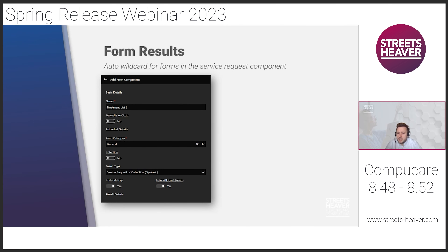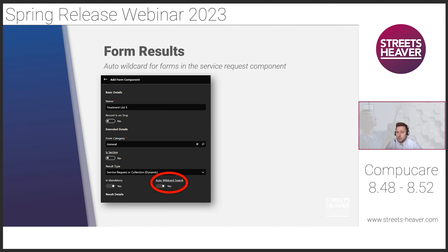Next, we have an enhancement when searching within service request components. We've added a new toggle labelled auto wildcard search. This means that when a search is performed using the form component, users will no longer be required to enter a question mark at the beginning of the search. Instead, it will automatically bring up close match results to the text being entered.